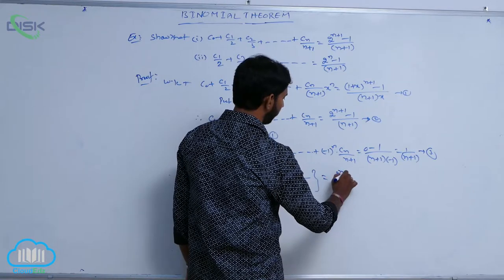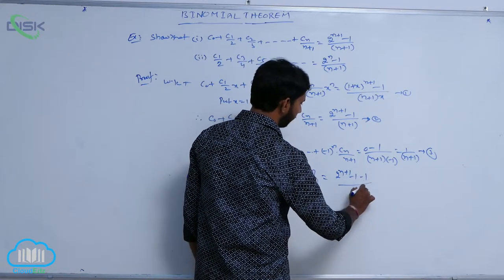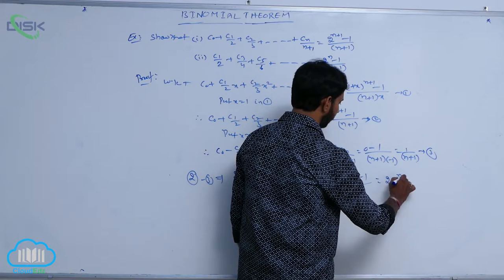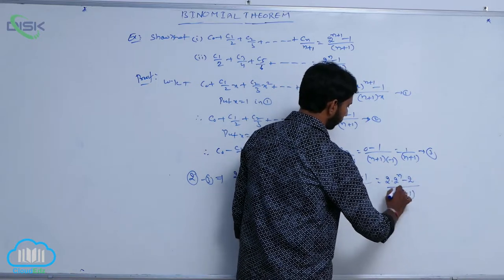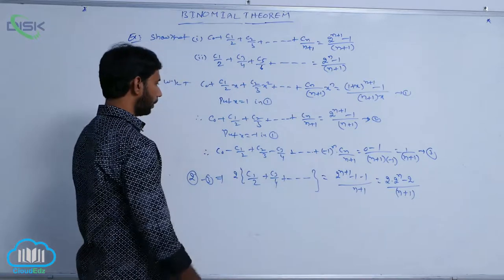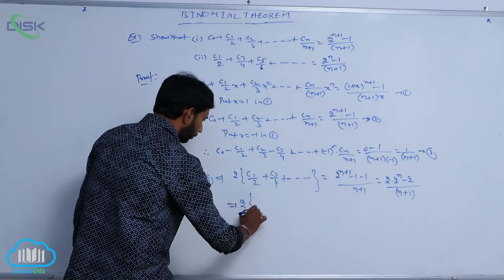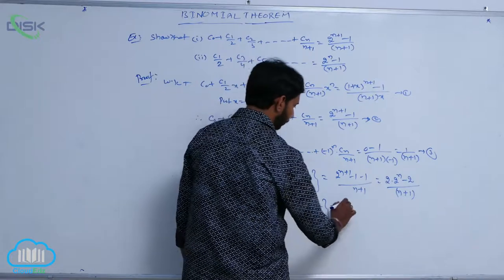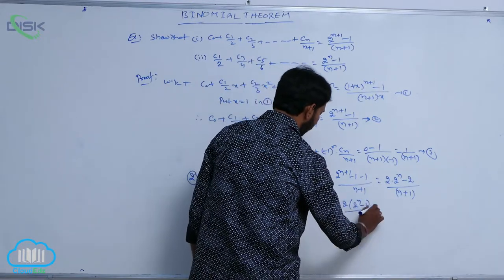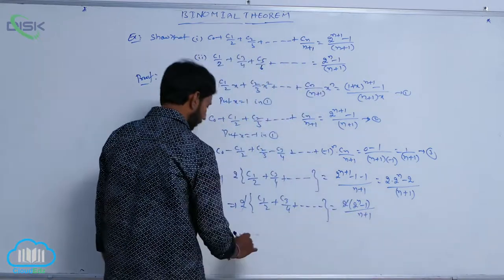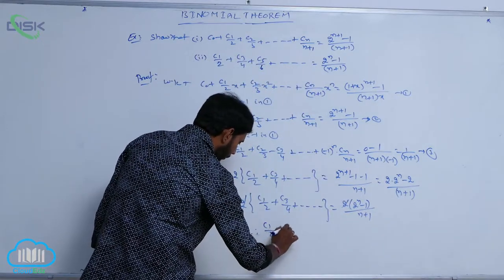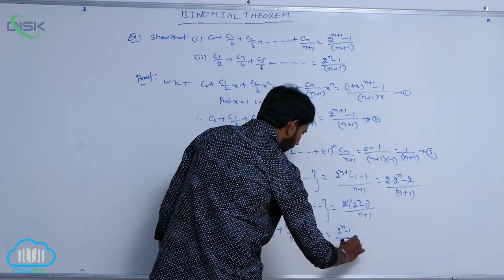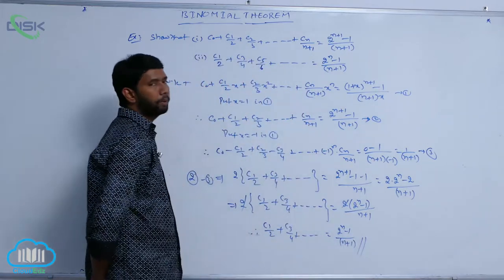The right side becomes (2^(n+1) - 1)/(n+1) - 1/(n+1), which simplifies to (2^(n+1) - 2)/(n+1) = 2·(2ⁿ - 1)/(n+1). So 2·(C₁/2 + C₃/4 + ...) = 2·(2ⁿ - 1)/(n+1). Dividing both sides by 2: C₁/2 + C₃/4 + ... = (2ⁿ - 1)/(n+1).